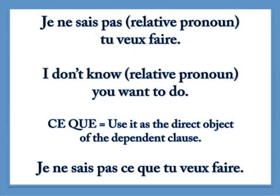Now let's look at ce que, used as the direct object of the dependent clause. Je ne comprends pas ce que tu veux faire — I don't know what you want to do. Remember that a direct object answers the questions 'who' or 'what.' In this case, it answers the question 'what.'